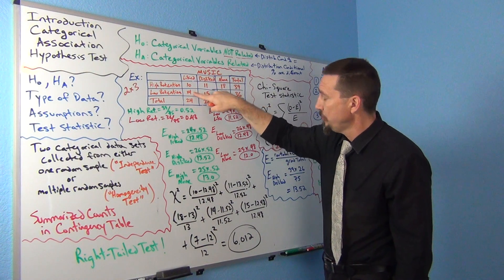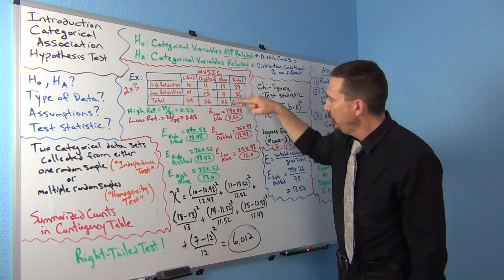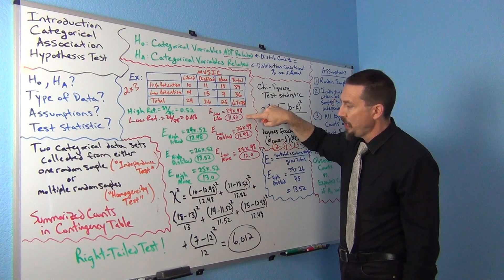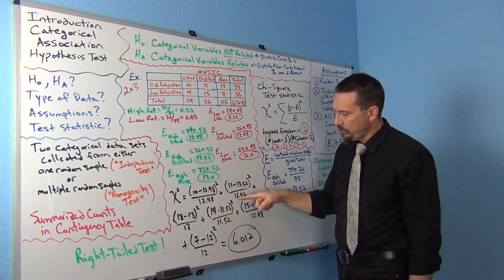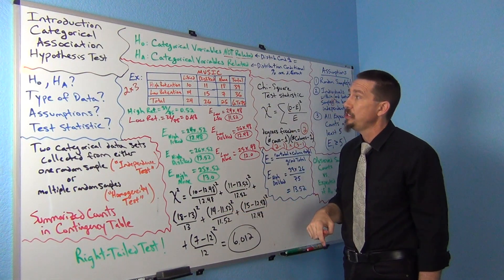Low retention liked music was 14, my observed. My expected count was 11.52, so 14 minus 11.52 squared divided by 11.52.